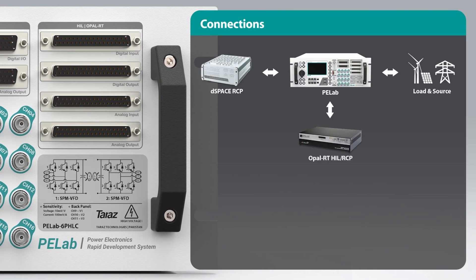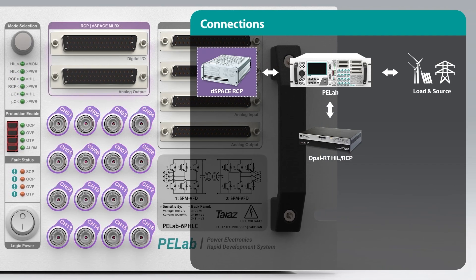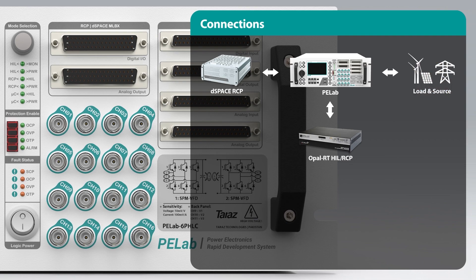The PE Lab can connect to the OpelRT HIL-RCP real-time simulator, D-Space Micro Lab Box RCP, as well as power sources and loads. The BNC connectors can also be used to monitor voltage and current signals on an oscilloscope. Note that all sensors are fully isolated.